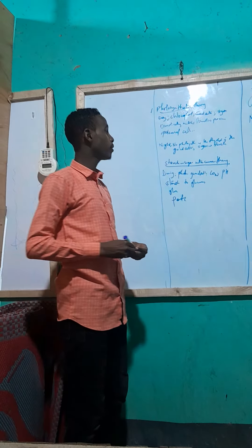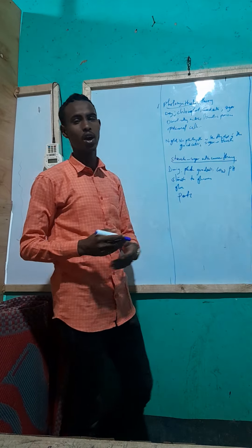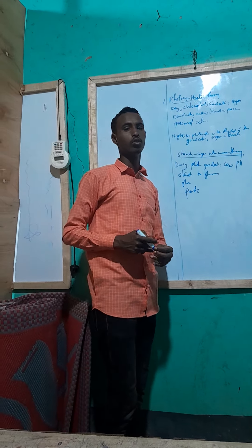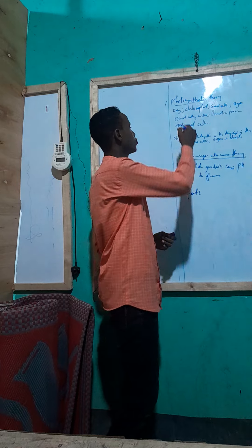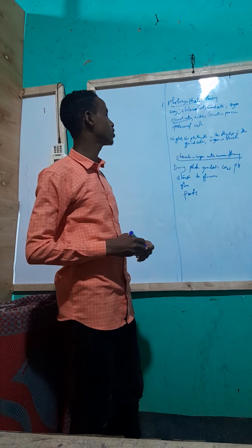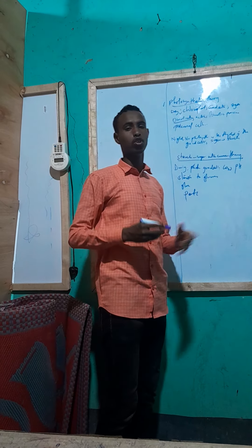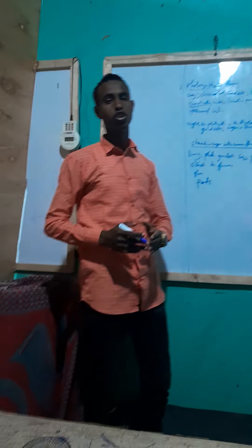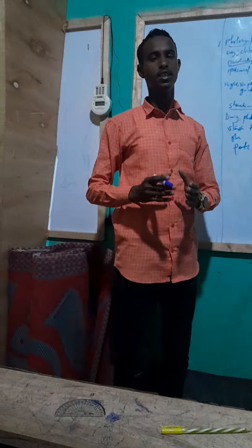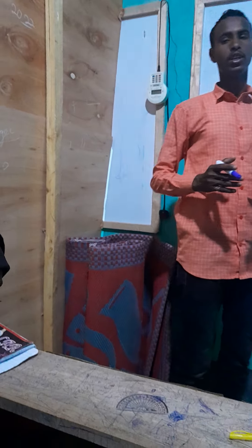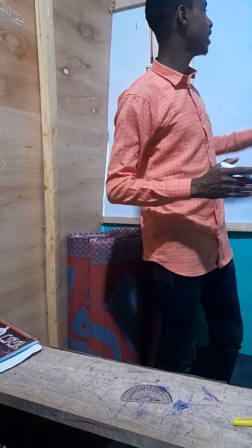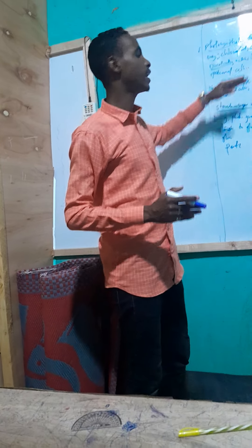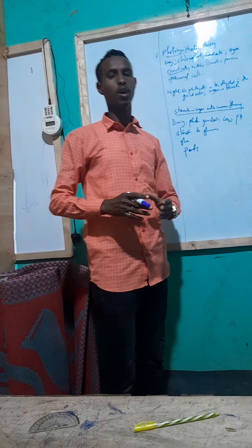During the day, the guard cells will carry out photosynthesis and produce sugar. This sugar is osmotically active, bringing about the osmotic effect which increases the osmotic pressure in the guard cells. The guard cells will then absorb water from the neighboring adjacent epidermis cells, causing the guard cells to bulge out and the stomata to open.